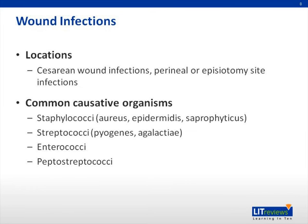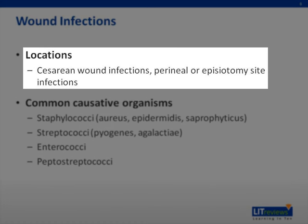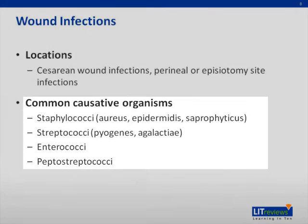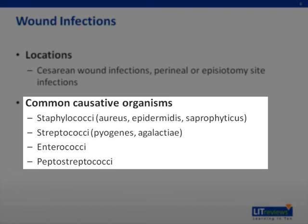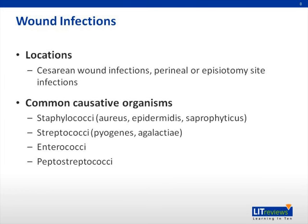Postpartum wound infections are uncommon. They occur in 1 to 5% of caesarean skin incisions and 0.1% of perineal lacerations or episiotomy sites. Most often, the etiologic organisms associated with wound infections are skin flora, including staphylococcus or streptococcus species and gram-negative organisms, as in endometritis.